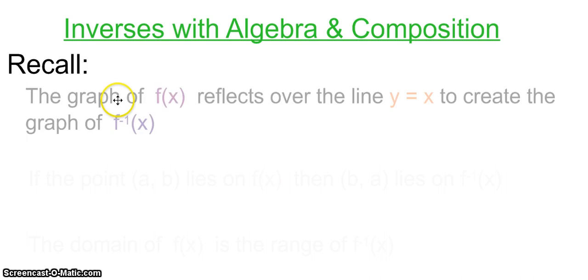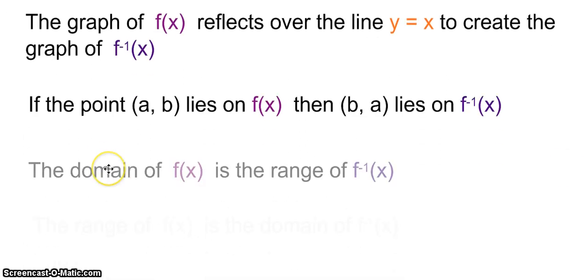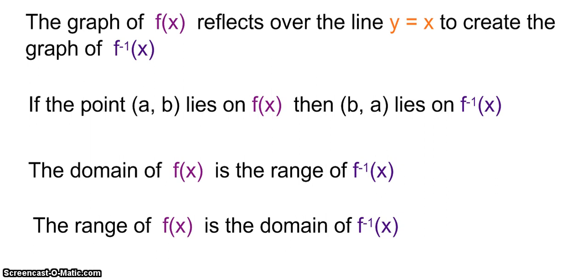So a few things to remember. The graph of f(x) is reflected over the line y equals x to create that new graph f inverse. In doing that, any point (a,b) that was on your original function now becomes the point (b,a), which is on your inverse function. The domain of f is going to be the range of f inverse, and the range of f(x) is going to be the domain of f inverse. So if you think about it, your inputs of f are now becoming the outputs of f inverse, and your outputs of f are now the inputs of f inverse.